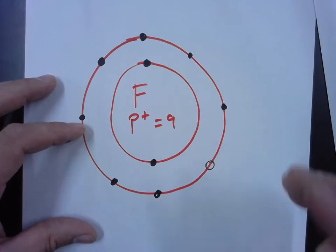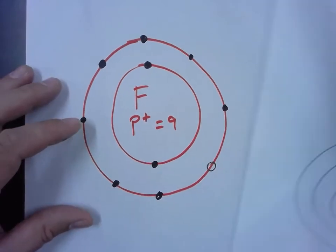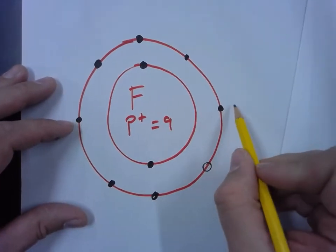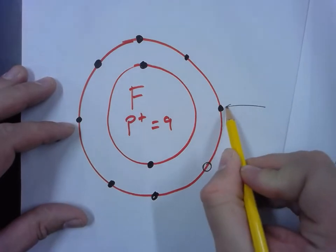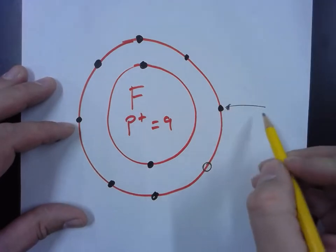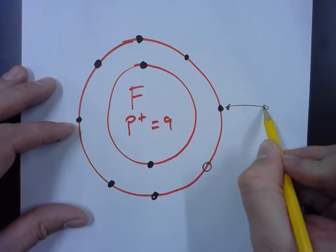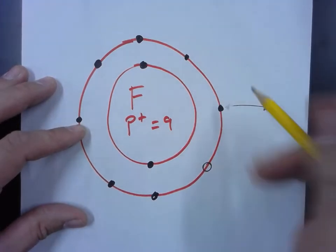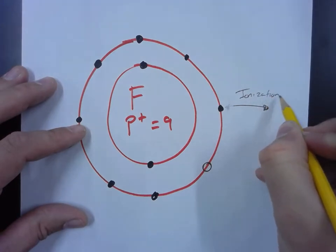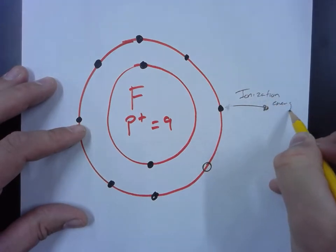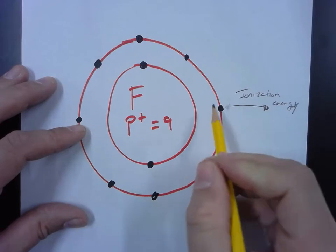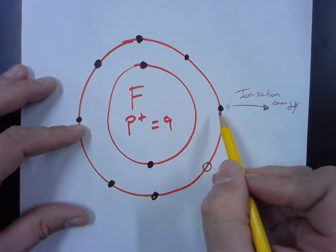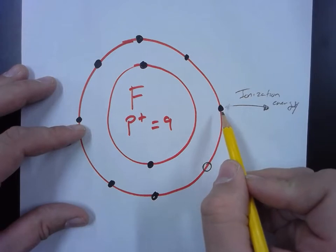Ionization energy is how much energy is required to remove an electron from here to here. So as you can imagine, it's going to take a massive amount of energy to try to strip one of these electrons away from fluorine because there is no way it's going to want to give this up.